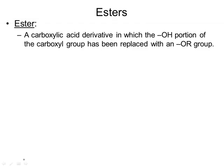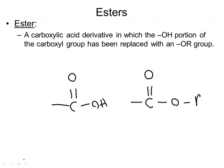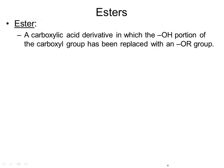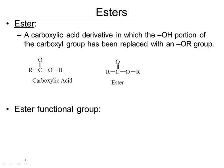An ester is a lot like a carboxylic acid. A carboxylic acid looks like this — with an OH — and an ester looks like this, swapping out that H for an R group, a relationship we've seen a lot before. So here's carboxylic acid, here's ester, and the ester functional group is this.